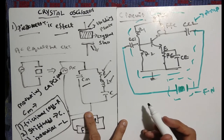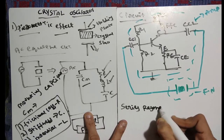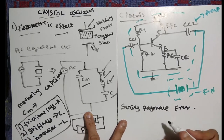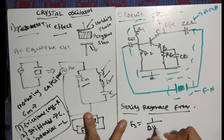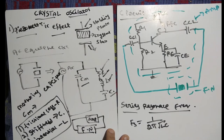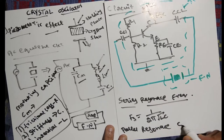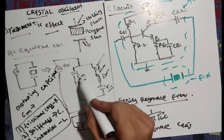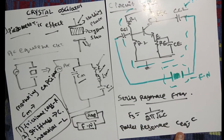From the equivalent circuit we can write the frequency. There are two types of resonance possible: series resonance and parallel resonance. Series resonance frequency fs equals 1 divided by 2π√(LC), where only L and C from the series branch are used and R is ignored. For parallel resonance frequency fp, we use the same equation but with an equivalent capacitance — Cm and C in series — so C_equivalent equals (Cm × C) / (Cm + C).